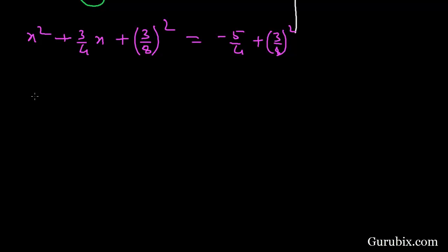This means we can write it as x plus 3 over 8 square. Here we have minus 5 over 4. Here we have 9 over 64.